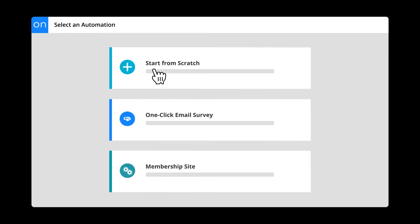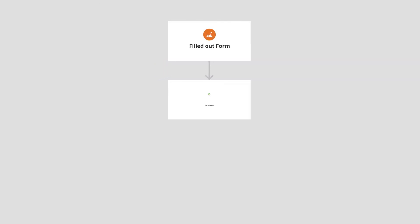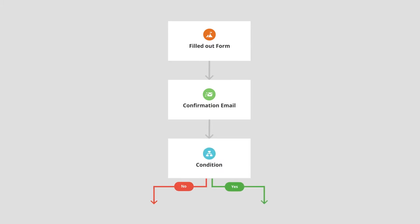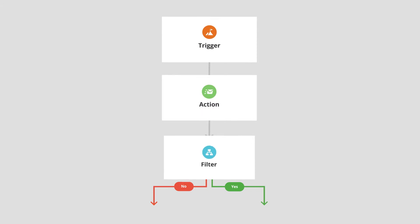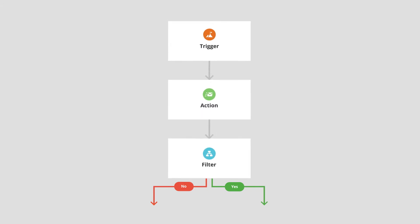First, what do we mean when we say automations? Automations are workflows built in a map-style layout tool that allow you to build a series of steps to systemize processes in your business. They're made up of several different element types categorized into triggers, actions, and filters, all of which we'll cover in depth in later videos.